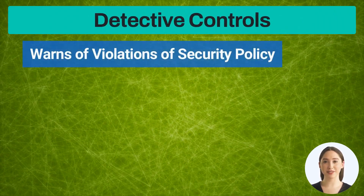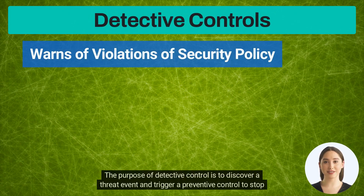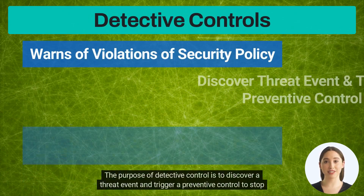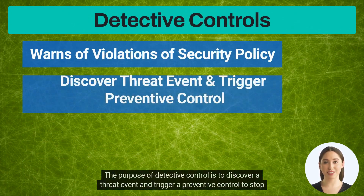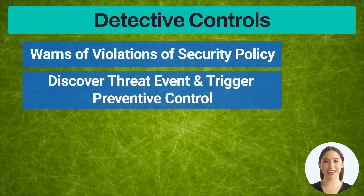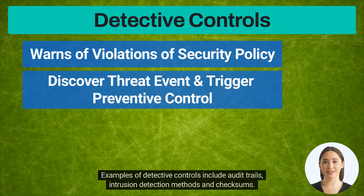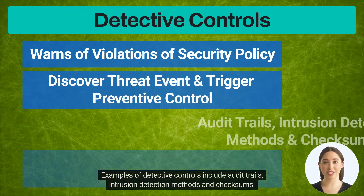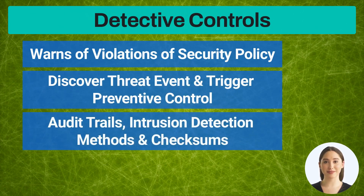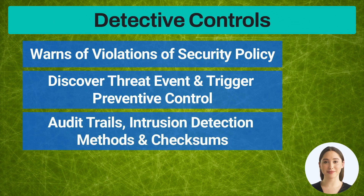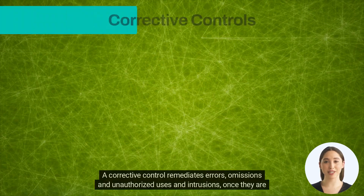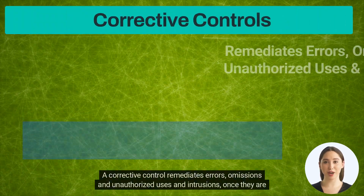A detective control warns of violations or attempted violations of an organization's security policy. The purpose of a detective control is to discover a threat event and trigger a preventive control to stop the threat. Examples of detective controls include audit trails, intrusion detection methods, and checksums.